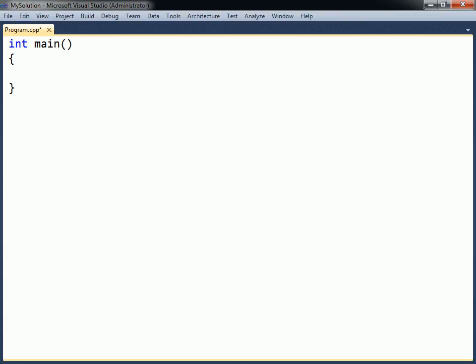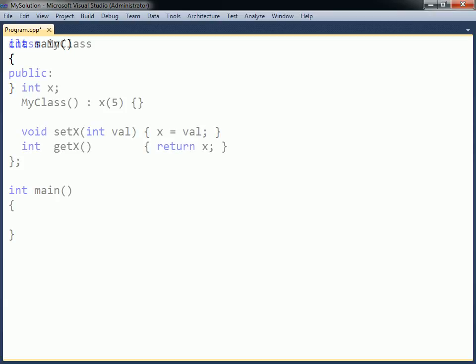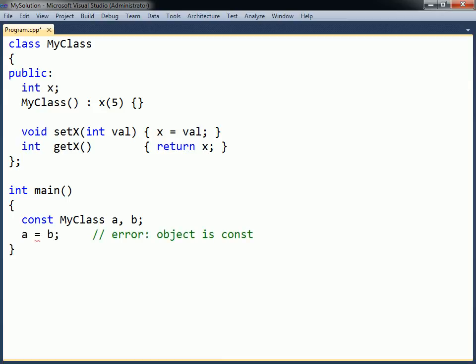Just as with variables, pointers, and references, objects can also be declared constant. Take the following class as an example. A constant object of this class cannot be reassigned to another instance. The constness of an object also affects its fields and prevents them from being changed.